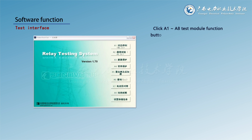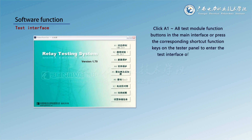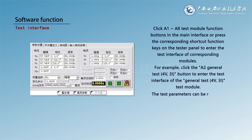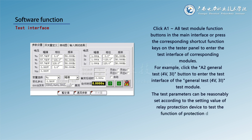Click the A1 through A8 test module function buttons in the main interface, or press the corresponding shortcut function keys on the tester panel, to enter the test interface of the corresponding module. For example, click the A2 General Test button to enter the test interface of the general test for the V3I test module. Test parameters can be reasonably set according to the setting values of the relay protection device to test the function of the protection device.